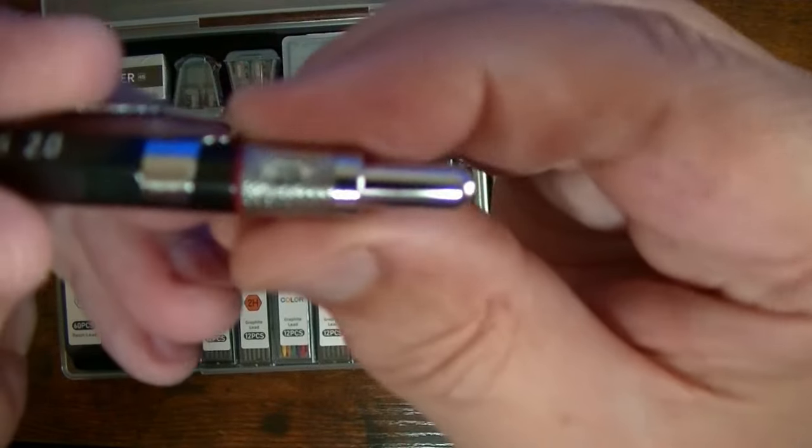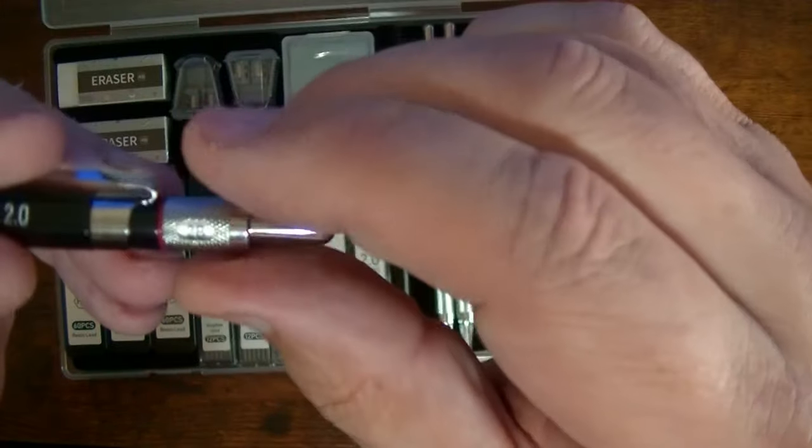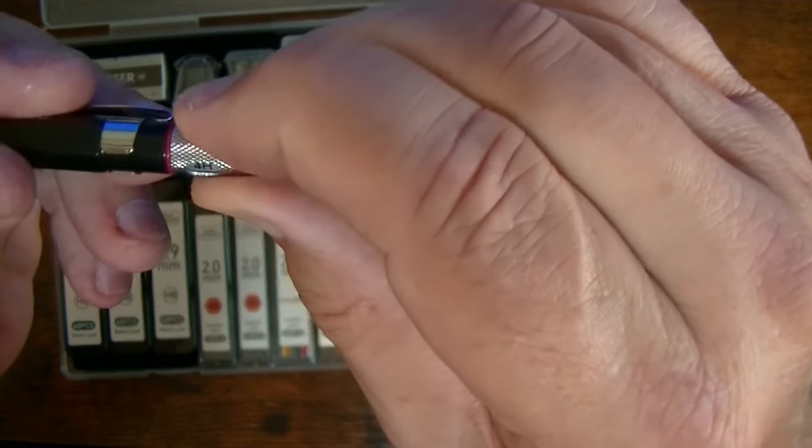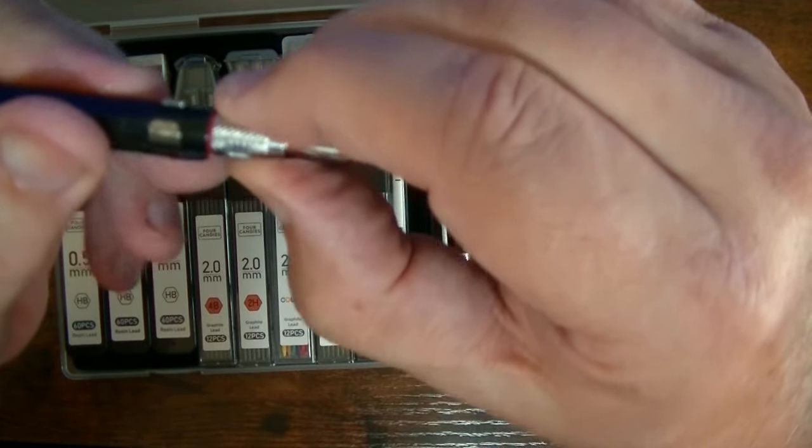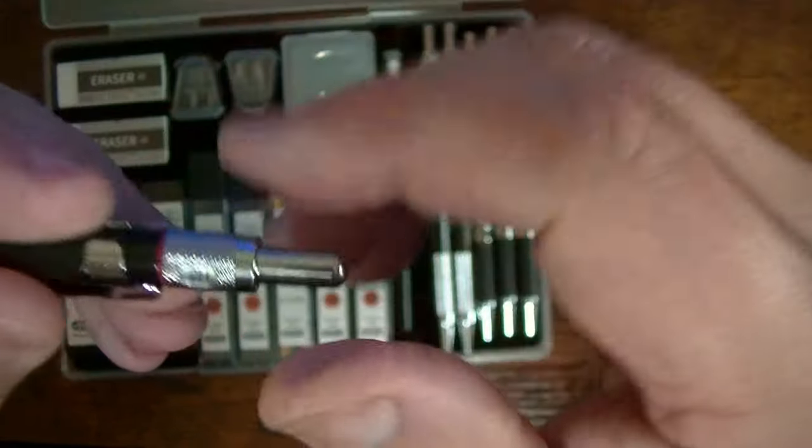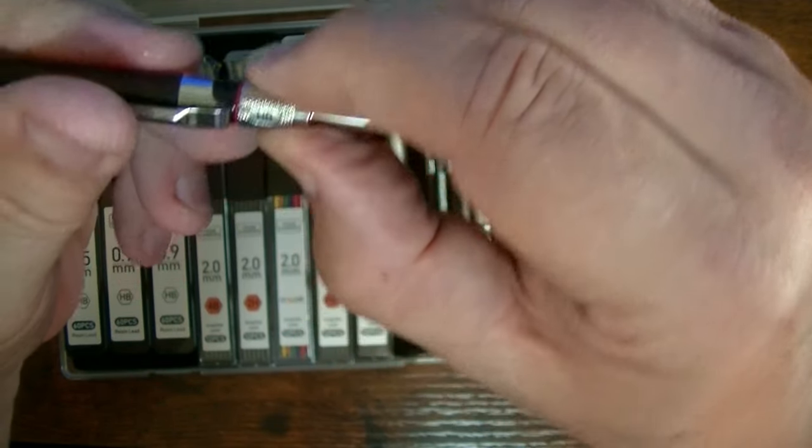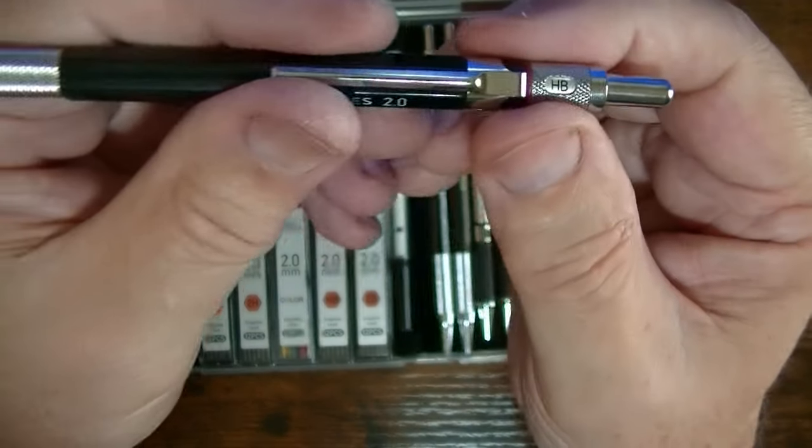And here I have it set to 2B. And then it has 4H. And then there's 2H. I'm putting it back on HB.